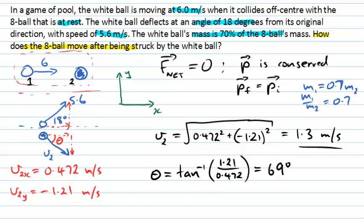So the final answer is that the 8-ball after the collision is moving at 1.3 metres per second in a direction at 69 degrees to the original direction of the white ball. An interesting follow-up is to consider whether this collision was elastic or inelastic — that is, was kinetic energy conserved? You could calculate the initial and final kinetic energies, both expressed as a multiple of the mass, and compare them to determine whether the collision is elastic.